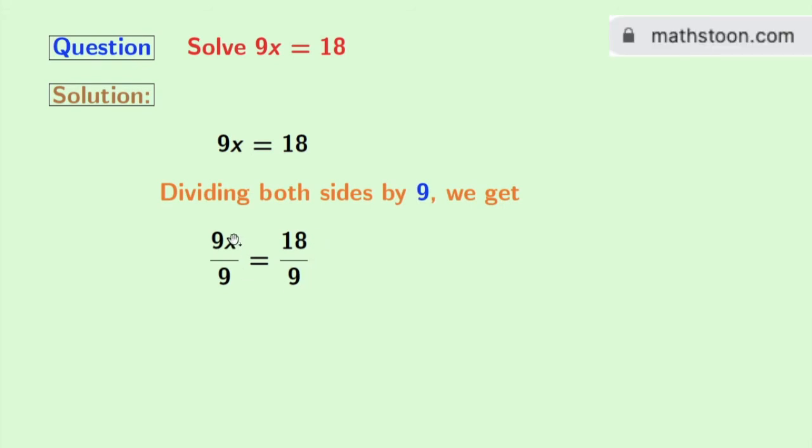Doing that we get 9x by 9 is equal to 18 by 9. Look that in the left hand side we have 9 in both the numerator and the denominator. So 9 gets cancelled and we are left with x.